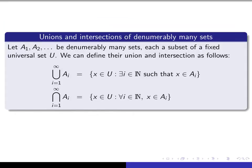Now the above generalizes from finitely many sets to infinitely many sets. Suppose we give ourselves denumerably many sets, which is to say there's an A sub I for every I in the natural numbers. We can then define their union and intersection using exactly the same technique. The union is the set of all X such that there exists an index I in the set of natural numbers such that X is an element of A sub I. And the intersection is the set of all X such that for every I in the set of natural numbers, X is an element of A sub I.